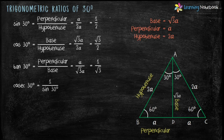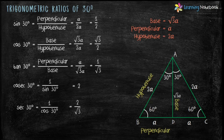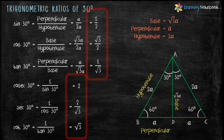Cosec 30° equals 1 upon sin 30°, which equals 2. Sec 30° equals 1 upon cos 30°, which equals 2/√3. And cot 30° equals 1 upon tan 30°, which equals √3. So these are the values of trigonometric ratios at theta equals 30°.